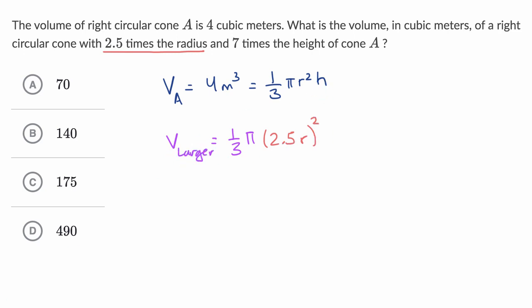And then what's its height? Well, instead of a height of just H, we're now going to have a height of seven times H. So let me write this times 7H. And now what is this going to give us? Well, let's see. This is going to be equal to 1/3 pi times 2.5 squared is 6.25. So it's going to be 6.25 R squared times 7H.